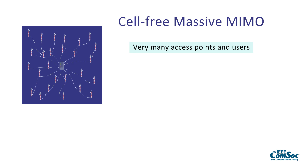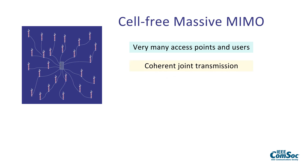We also serve a large number of users, but it's supposed to be fewer than the number of access points. It's called massive MIMO because it's based on coherent joint transmission — these antennas are transmitting jointly in the uplink and receiving signals jointly in the uplink.